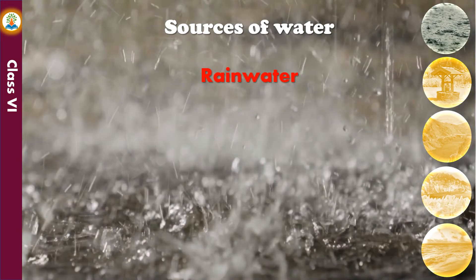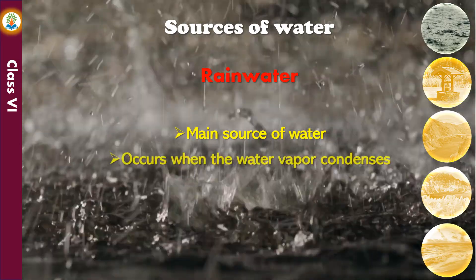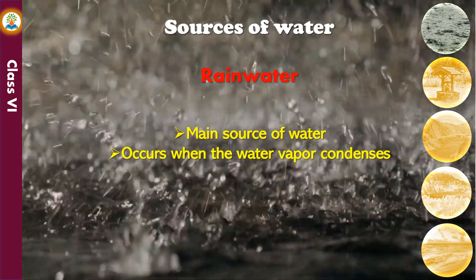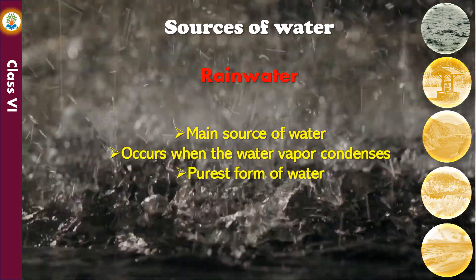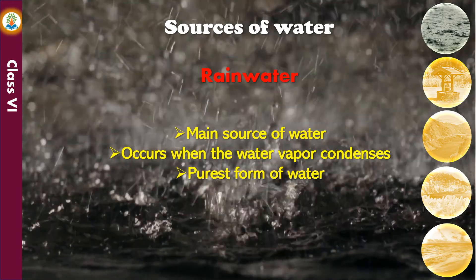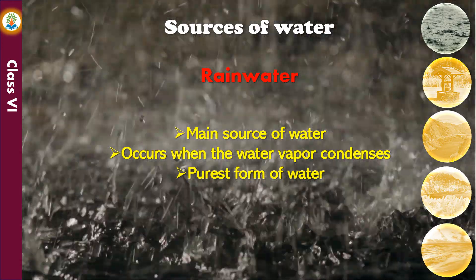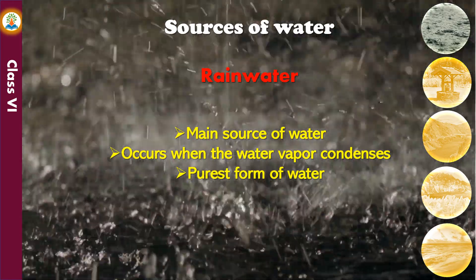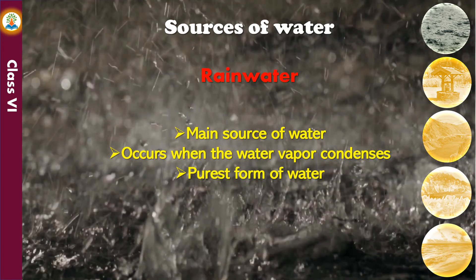Rain water is the main source of water. Rainfall occurs when the water vapor in the air condenses. It is considered the purest form of water; however, while falling through the atmosphere, it gets mixed with dust particles and other impurities present in the atmosphere and becomes polluted.